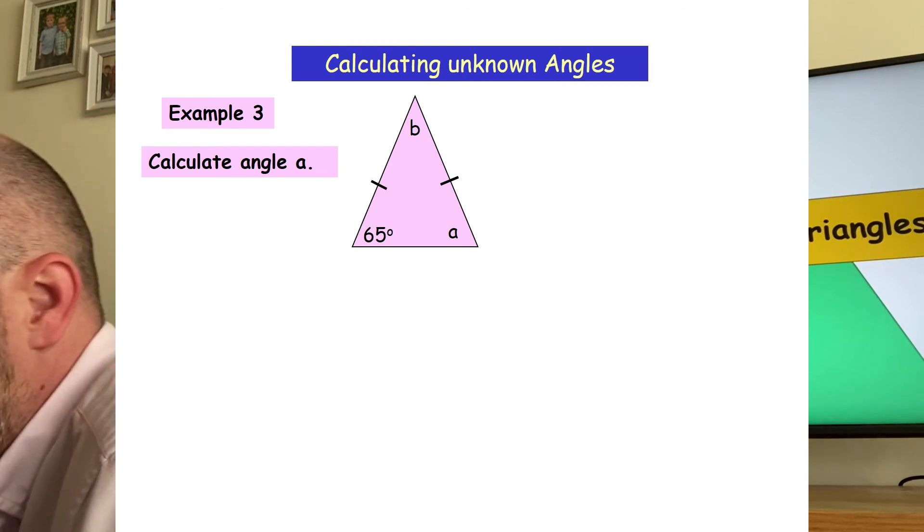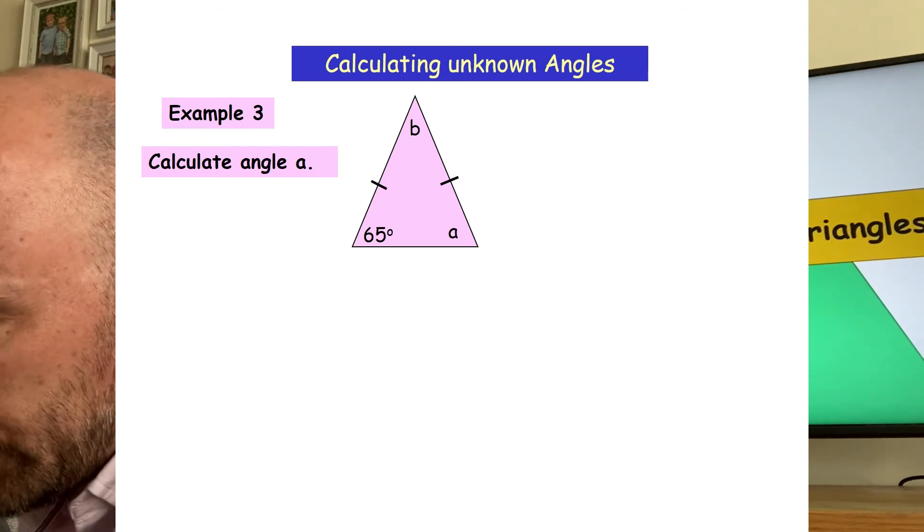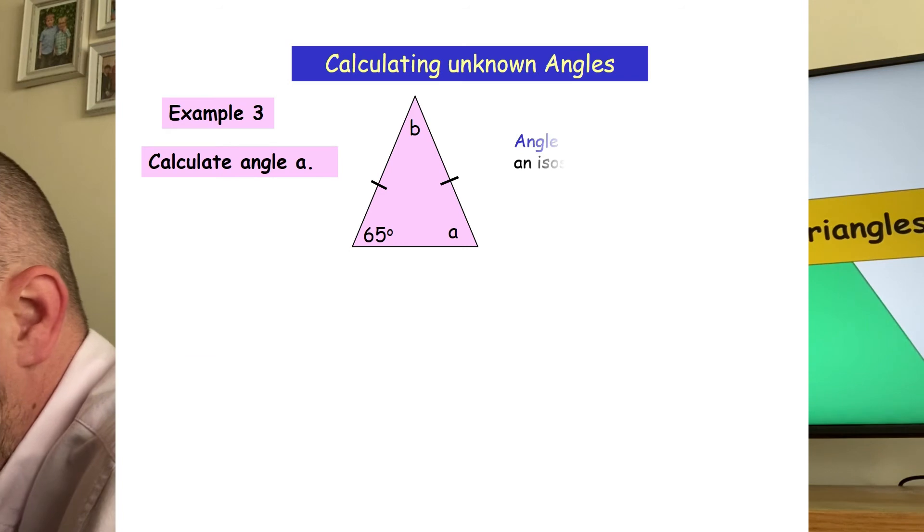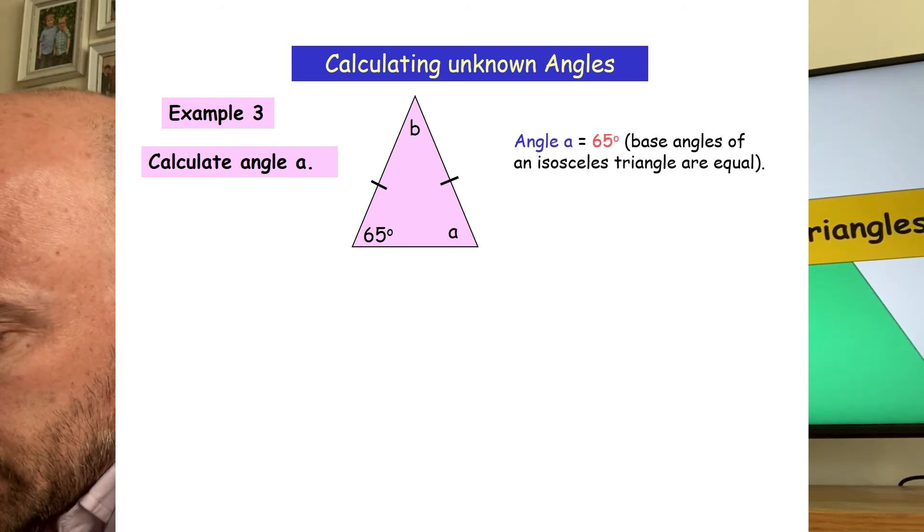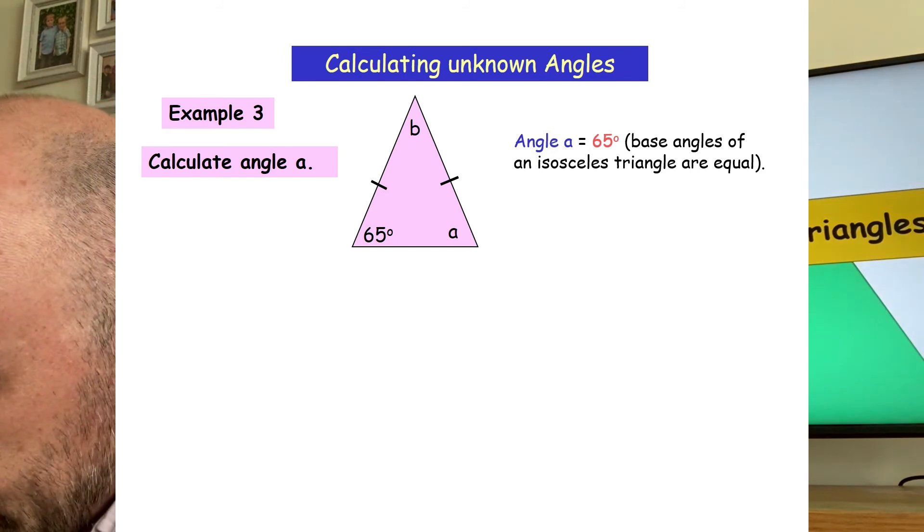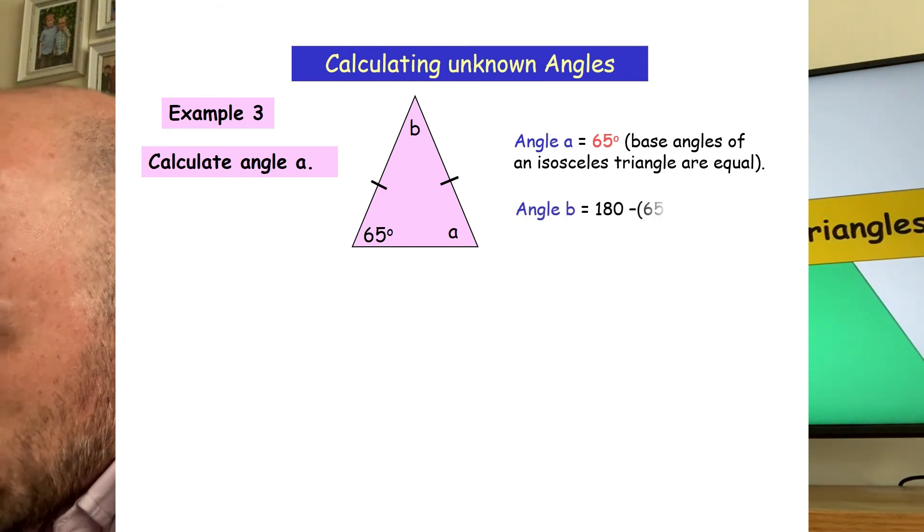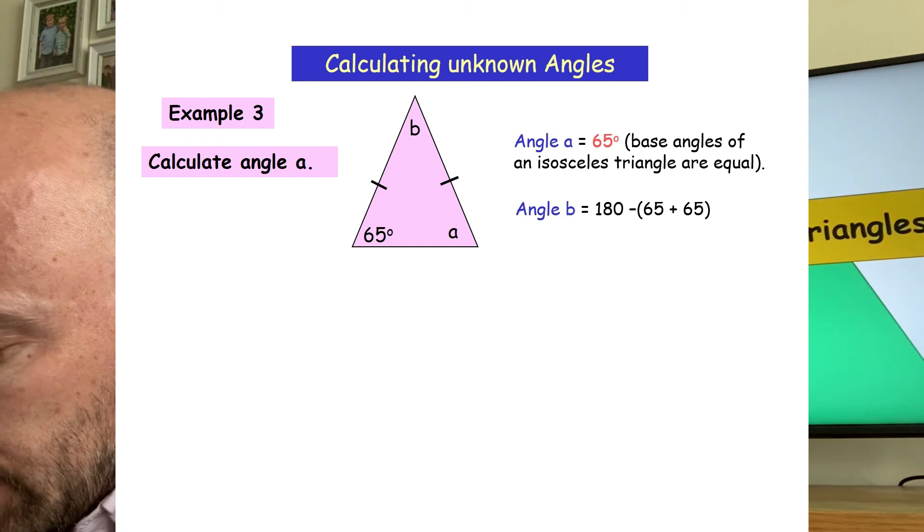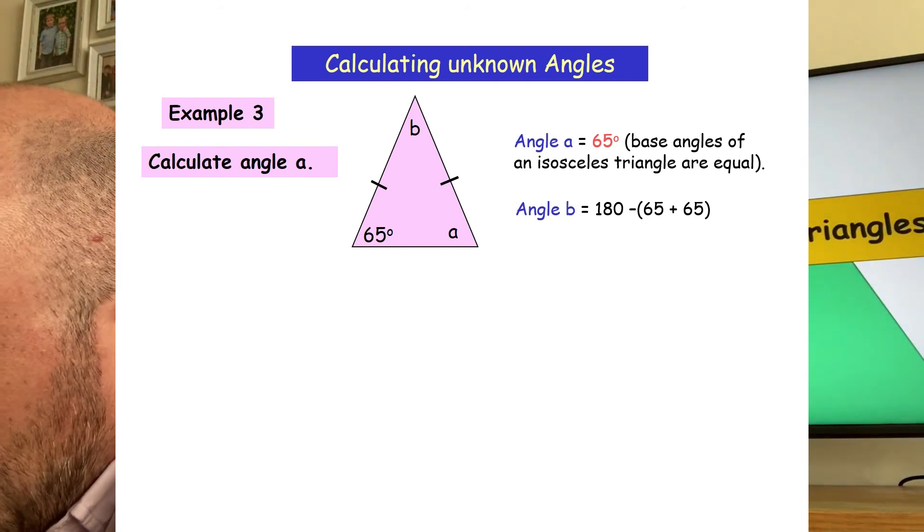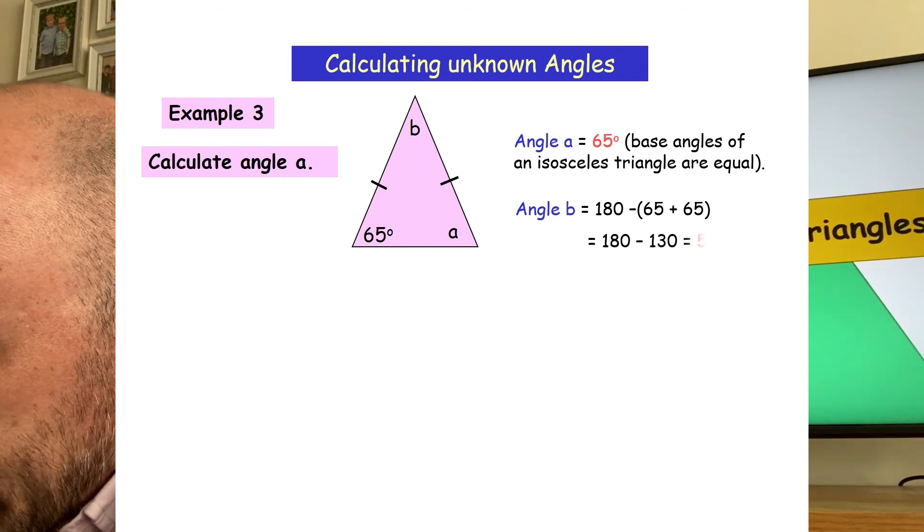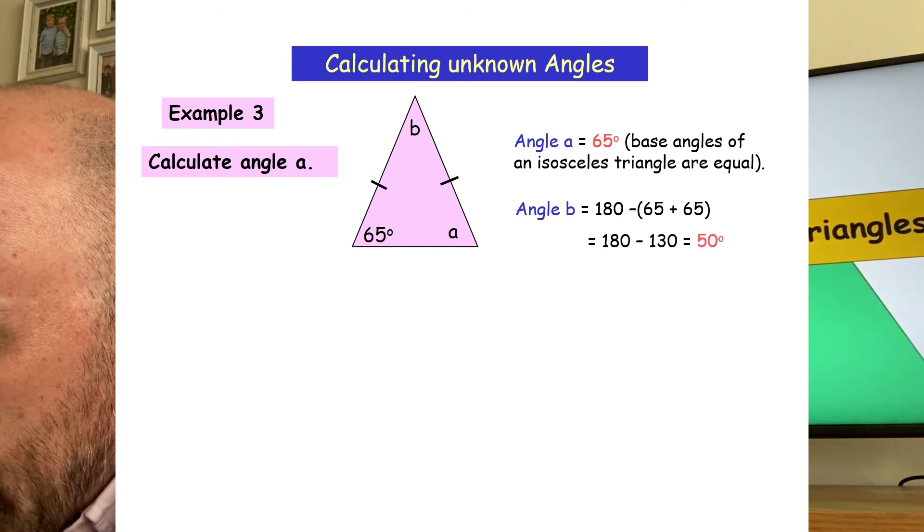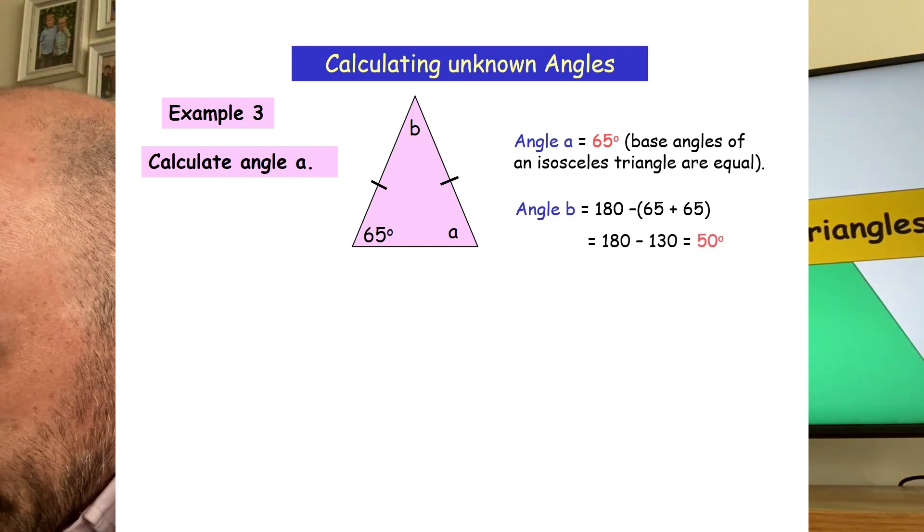My third example is an isosceles triangle. Again, I know that because it's got those two little lines that tell you that two of those sides are the same length. So that means if one corner is 65, that does mean that the other corner is going to be 65. So I need to add those two together, which gives me 130, subtract that from 180, which means that the missing angle is 50 degrees.